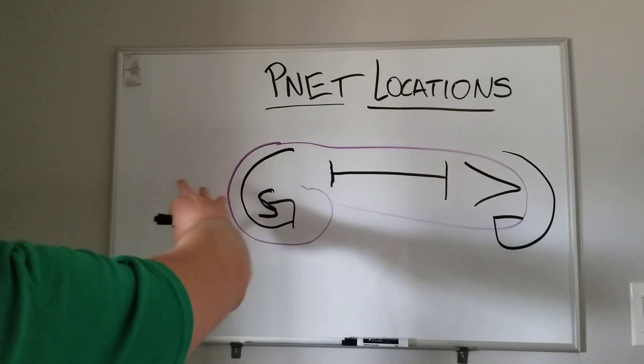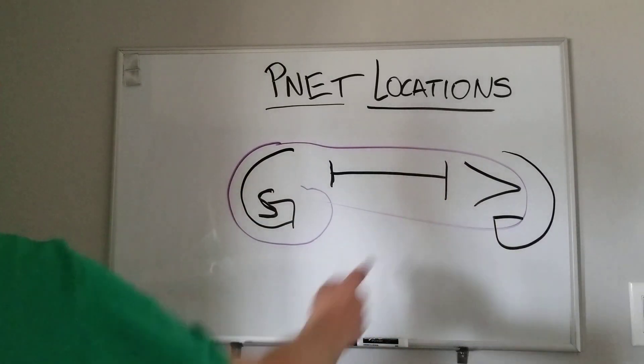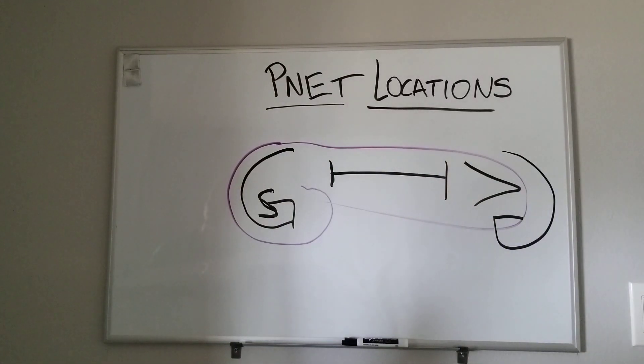Insulinoma is usually equally distributed throughout. VIPoma is this sideways V back here in the tail. And then the backwards G at the end is glucagonoma, which is found in the body tail as well.